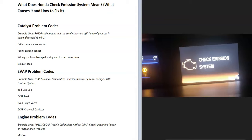If you have a Honda and it's giving you an error message that says 'check emission system,' I thought I'd go over what it means, what causes it, and how you might be able to go about fixing it. Basically, the onboard computer is seeing an error with the vehicle related to the emissions. This can be caused by a few different things — a catalyst problem, an EVAP problem, or possibly an engine problem.